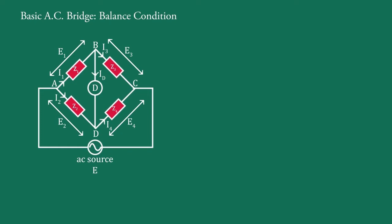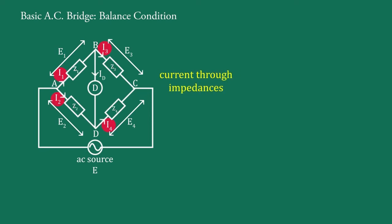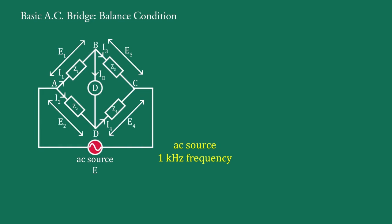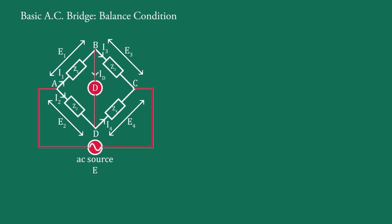Z1, Z2, Z3 and Z4 are the impedances of the respective arms. I1, I2, I3 and I4 are the currents through these impedances respectively. D is the detector — it is generally a pair of headphones or a null detector — and this is an AC source of about one kilohertz frequency.